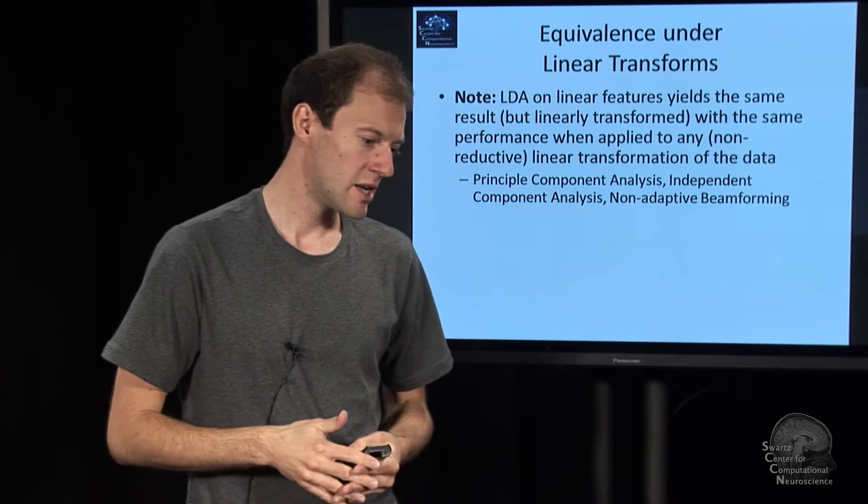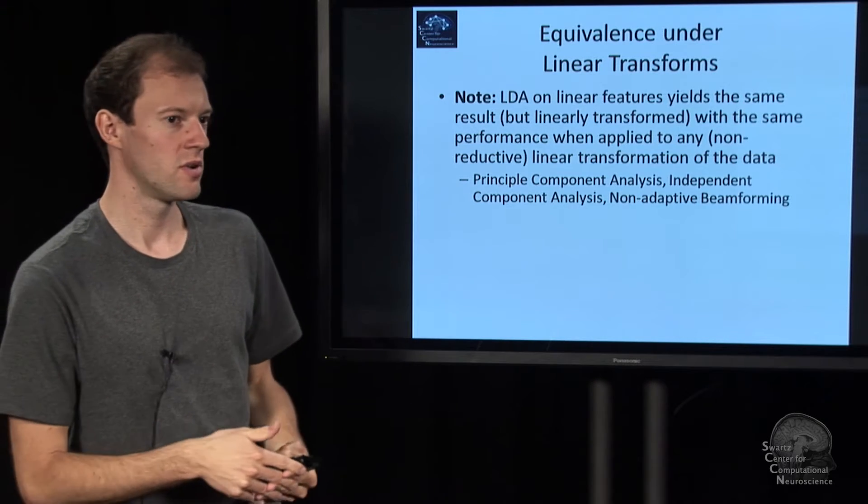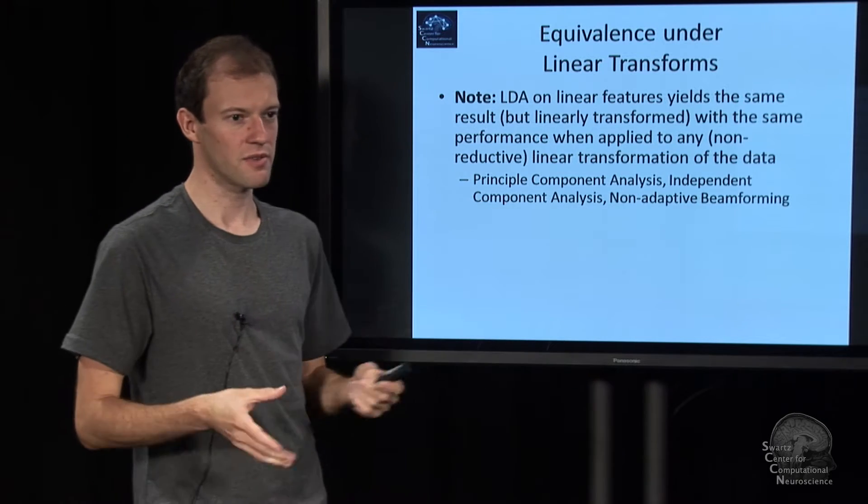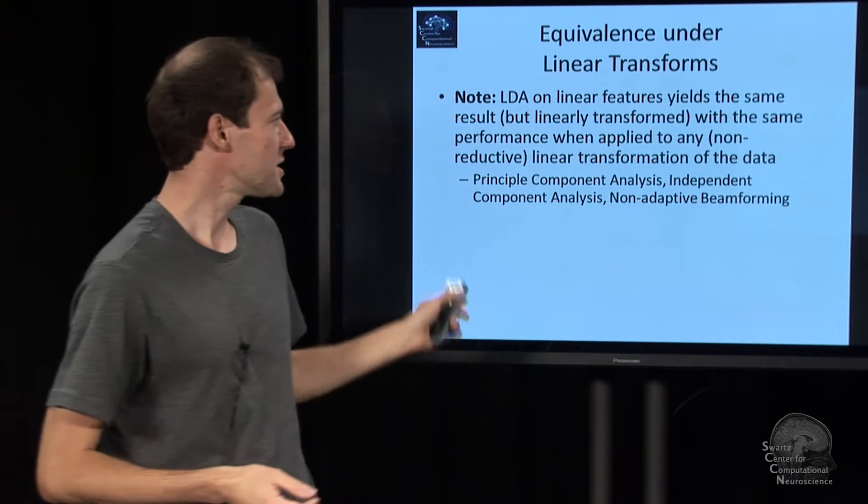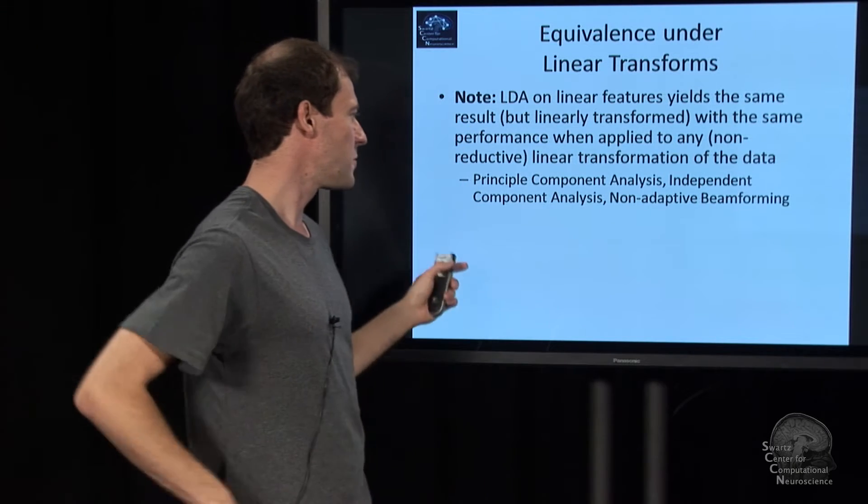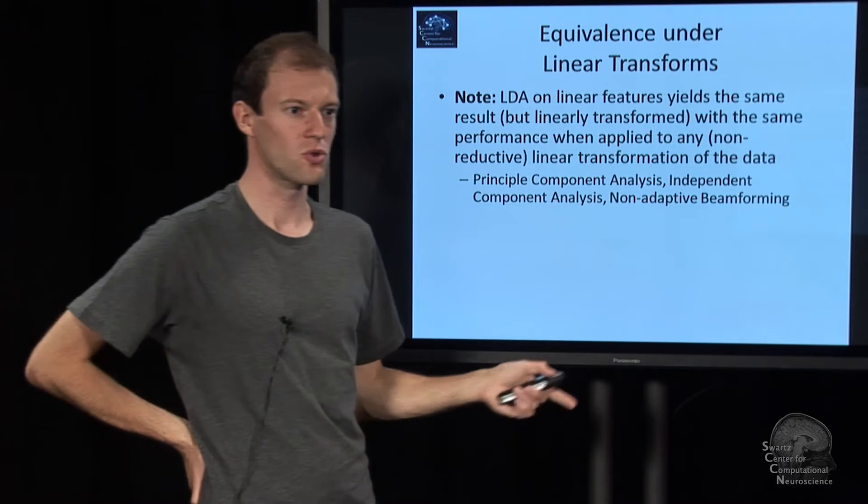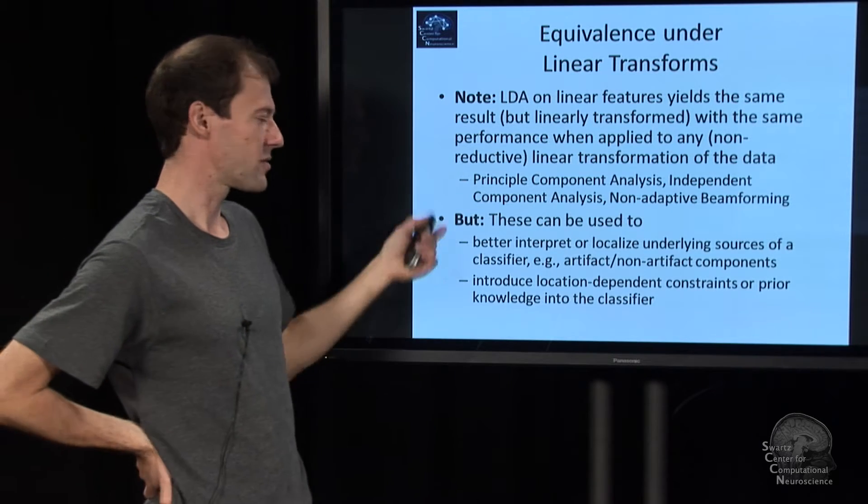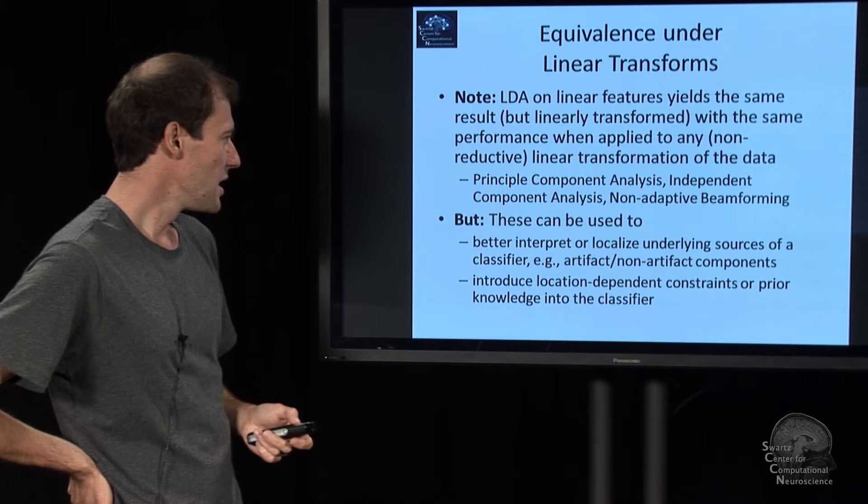So suddenly, you truly do get a difference when you apply a method to, say, ICA versus raw channels. It's just in this case, we're very lucky that we can basically solve it all the way through with one method and it's optimal.